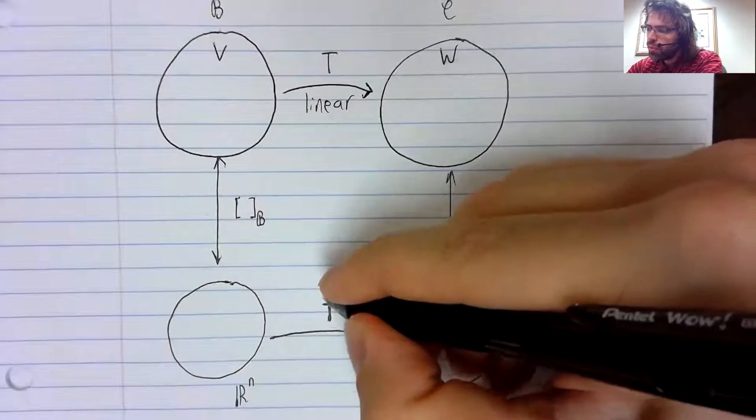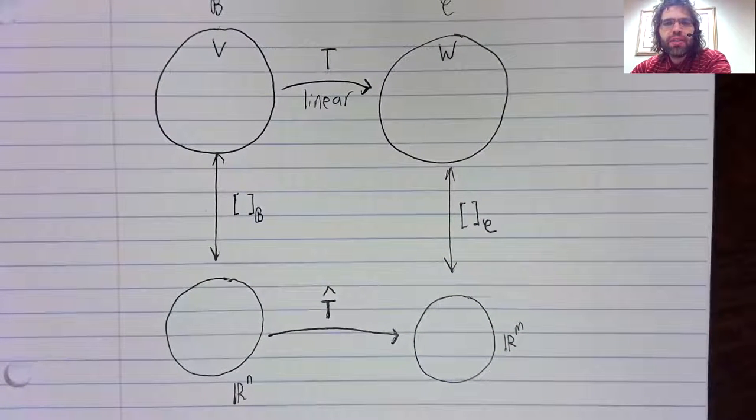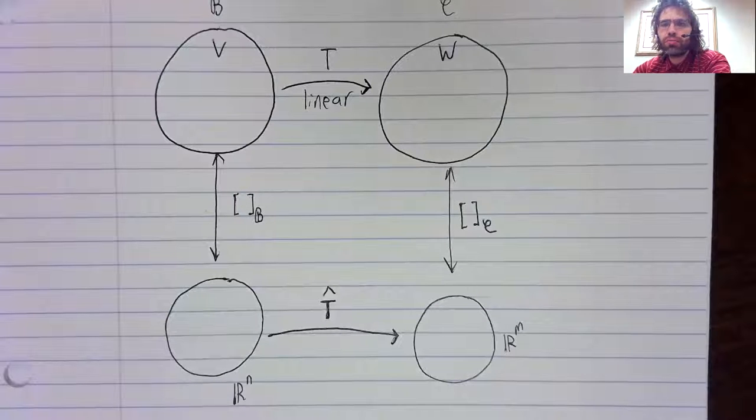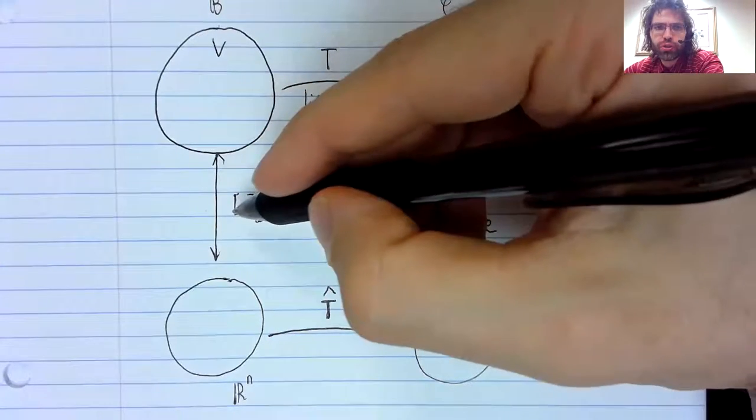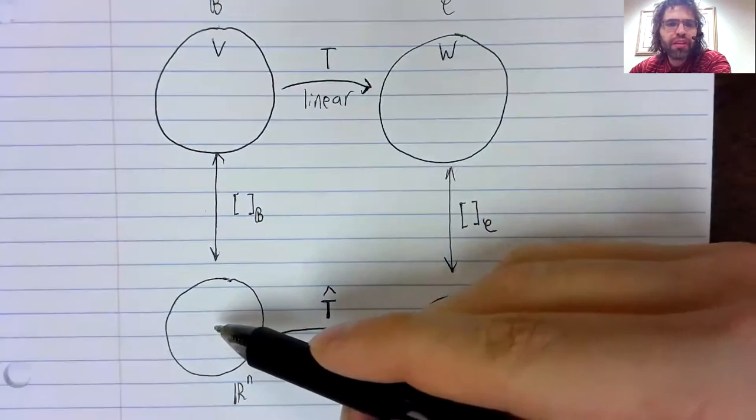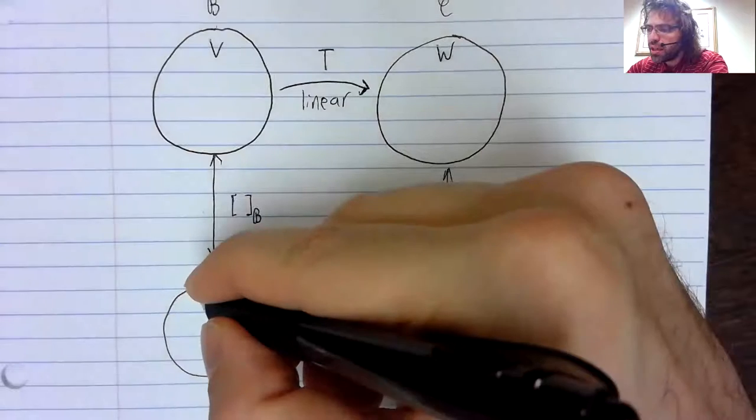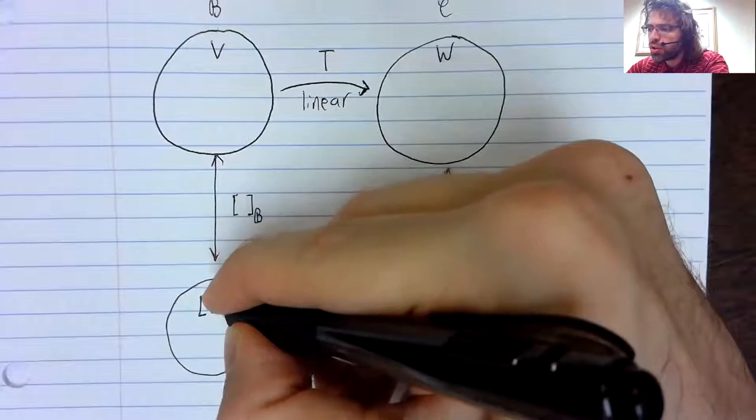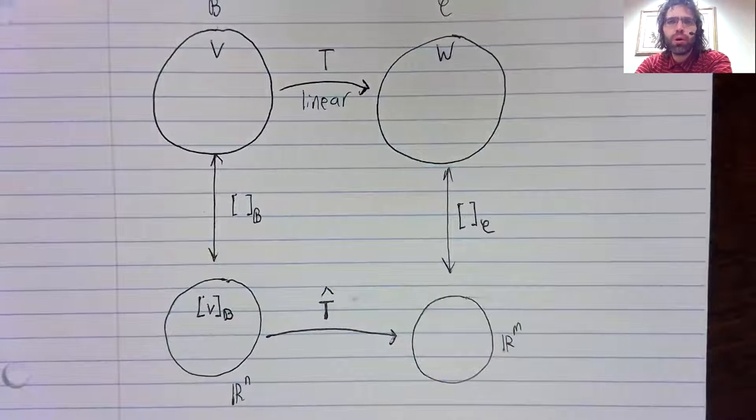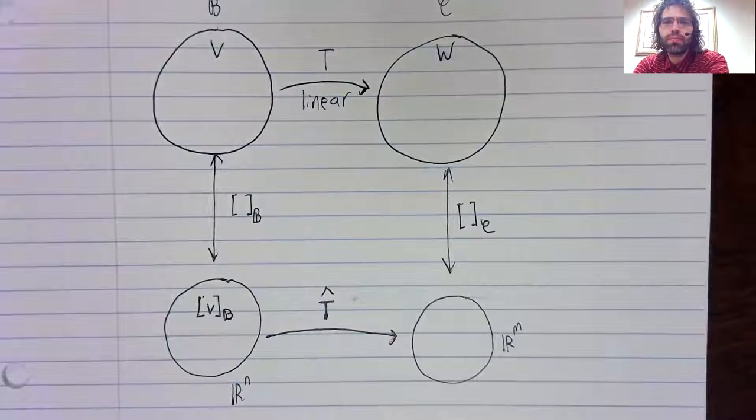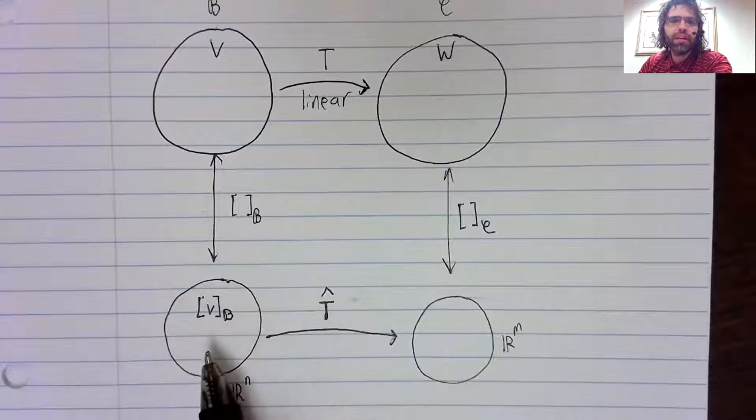We're calling this identical mapping T hat, and we've defined T hat as follows. Isomorphisms are onto, remember. So every vector in R^n is the image of a vector in V. That is to say, every vector here can be thought of as a coordinate vector. If we have a coordinate vector of V in R^n,